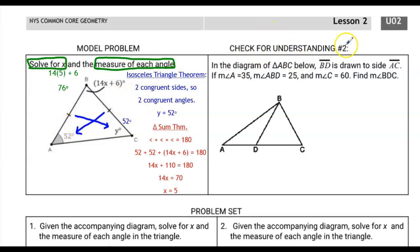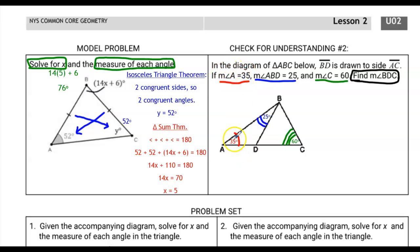Try this check for understanding — we're identifying the important aspects of these triangles. Keep in mind there are multiple triangles here. The best approach is to label everything first. Angle A is 35, angle ABD is 25, and angle C is 60. I can see that in triangle ABD I know two angles — 35 and 25 — and I can find the third angle using the triangle sum theorem.